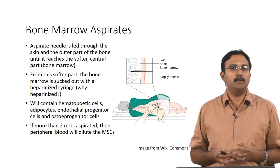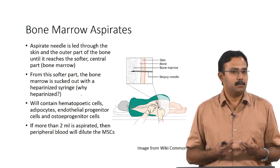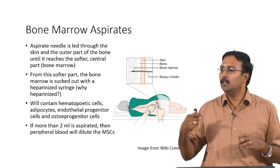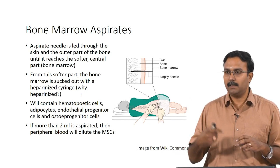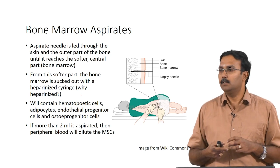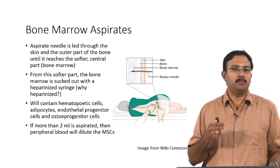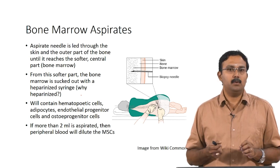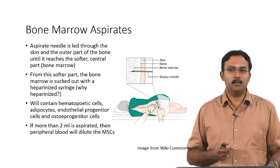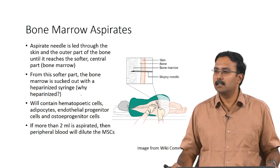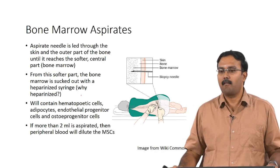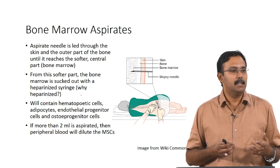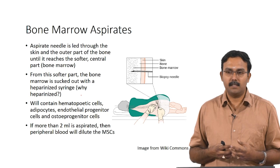You are causing a puncture through the skin and muscle tissue into the bone — it is going to be quite painful. From the softer part of the bone where the bone marrow is present, the marrow is sucked out using a heparinized syringe. Heparin is used to prevent blood clotting, since these aspirates can actually clot very rapidly.